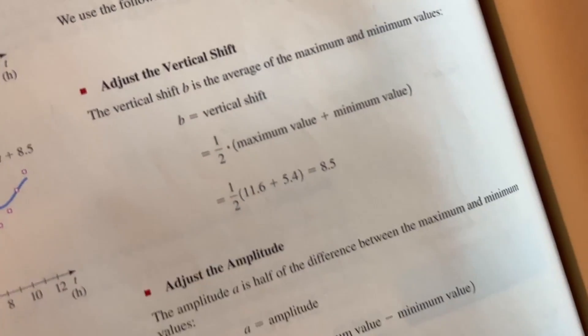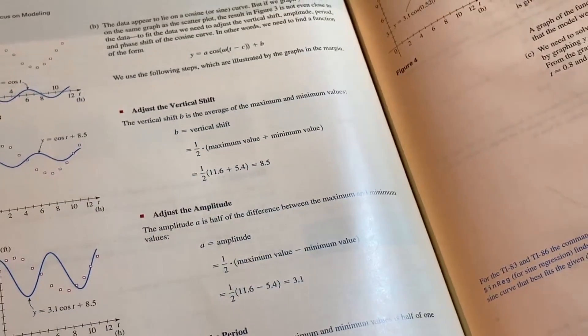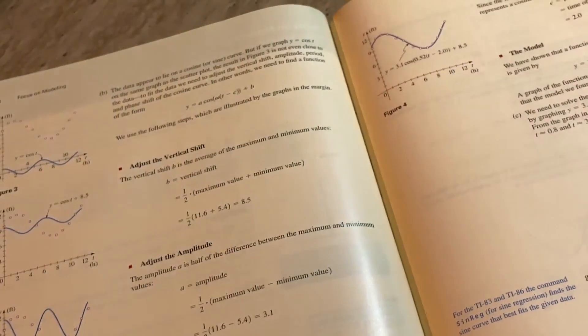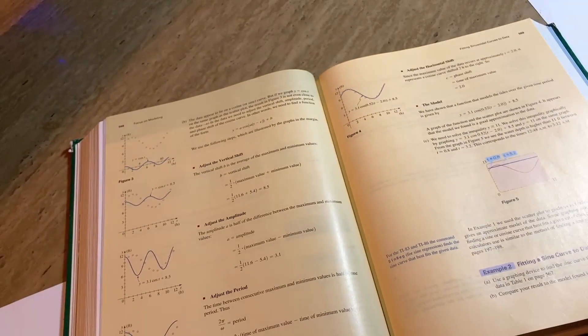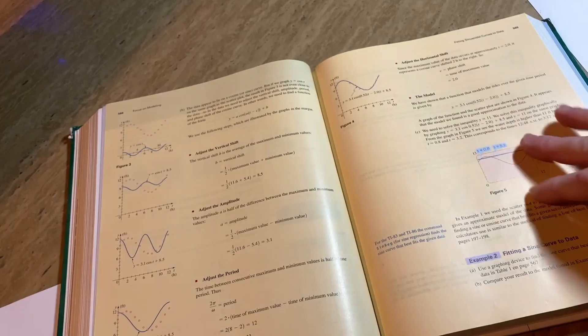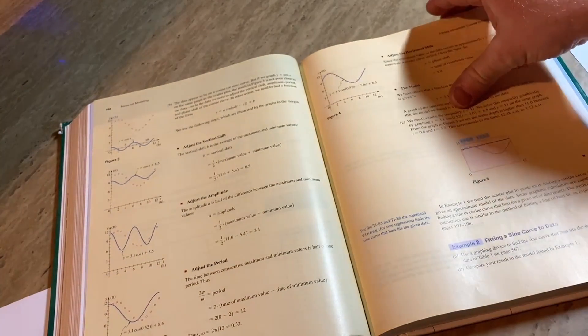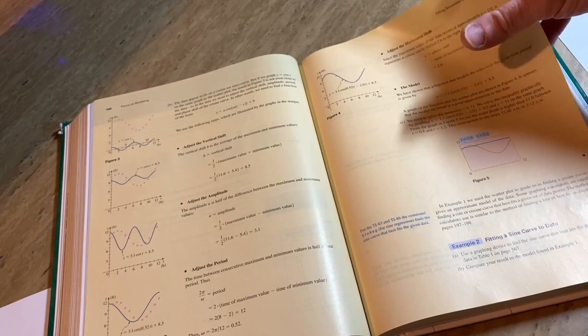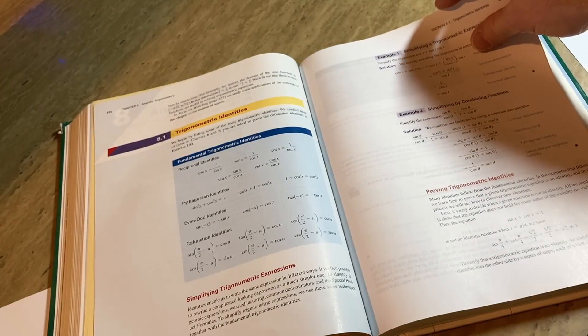So what I did was I took some data from a government website that showed the actual tides of the ocean near a location that's somewhat near me. And then I followed these steps and I created a model based on that data. And I was like, that's really cool. So it works. It's kind of fun.